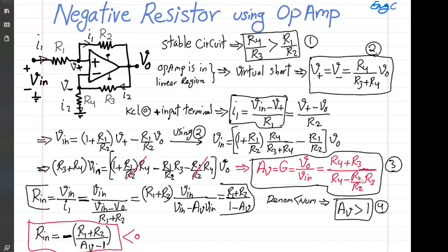Av was already found. As an additional observation, dividing numerator and denominator by R3, we can write Av as (R4 over R3 plus 1) divided by (R4 over R3 minus R1 over R2). The stability condition from Equation 1 says R4 over R3 must be greater than R1 over R2, which means the denominator of Av is always positive. So Av is positive and always greater than 1.